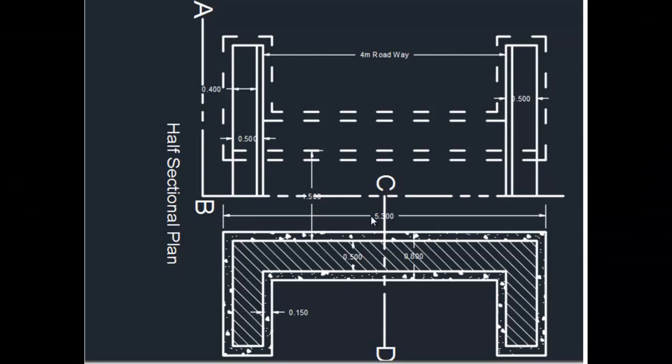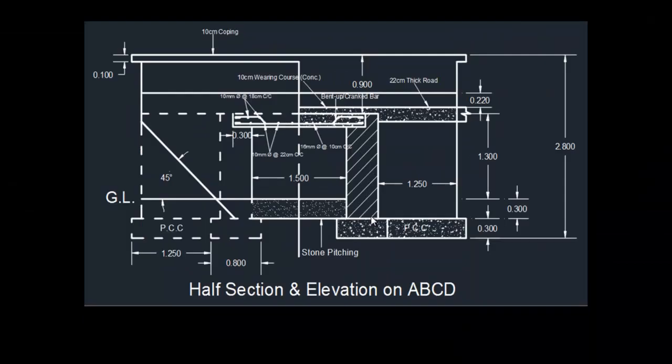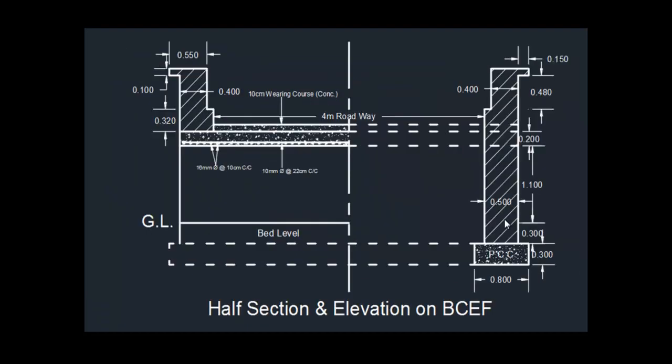This is the slab culvert video I have already provided, and its link is given in the description box. Also its first part of estimation I have provided in my last video, that is also given in the description box. Here I will show you how to calculate the main bars, bent-up bars, and distribution bars — length and numbers — with detailed formulas, so that the second part of the estimate will be easy to understand.